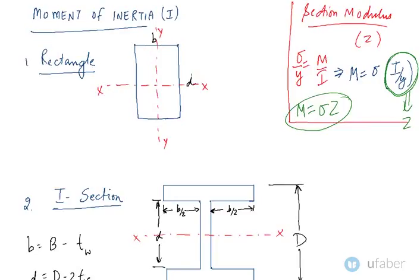Now let us go through the moment of inertia values for some common cross sections. For a rectangular cross section, let us say the depth of the section is D and the width is B. The moment of inertia about the x-x axis is D cubed by 12, and about the y-y axis it is D into B cubed by 12.